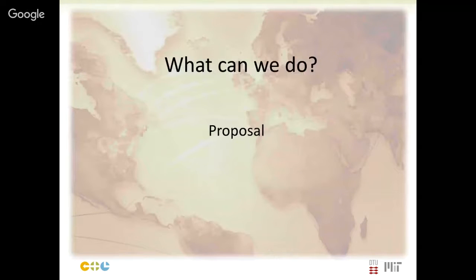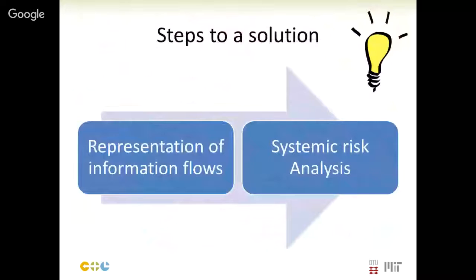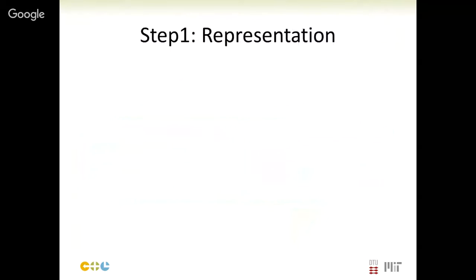Our proposal is a two-step solution derived from everything discussed. The first step is looking for better ways of representing the information flows in supply chains. The second step uses this representation to perform what is called a systemic risk analysis. For the representation, we can give an example of a seller and a buyer with a transport agent carrying goods from the seller to the buyer — this physical movement is the event layer of the system.